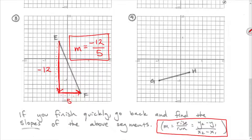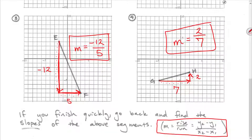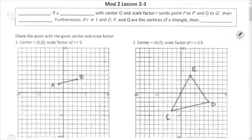In number 4, going from G to the right angle point, it's 7 spaces in the positive x direction, so positive 7. From the right angle point going up to H is 2 spaces, which is positive 2. The slope is the rise over the run: 2 sevenths. The most common mistake with this method is getting signs wrong — if the line goes down left to right, it's negative; if it goes up, it's positive.